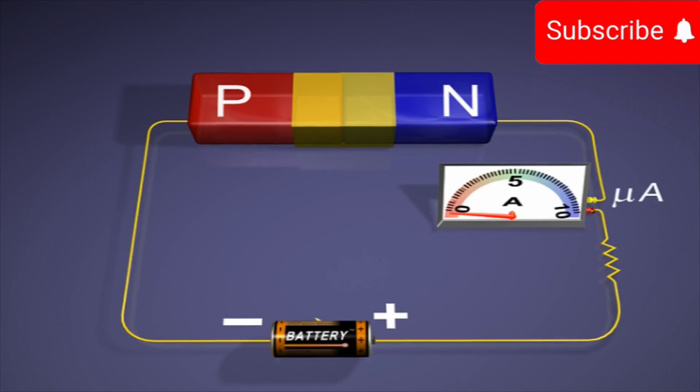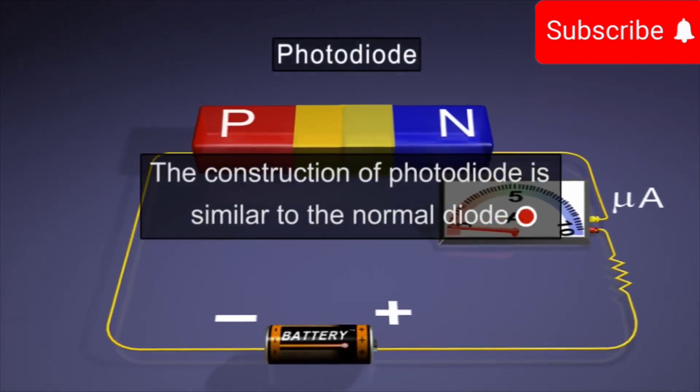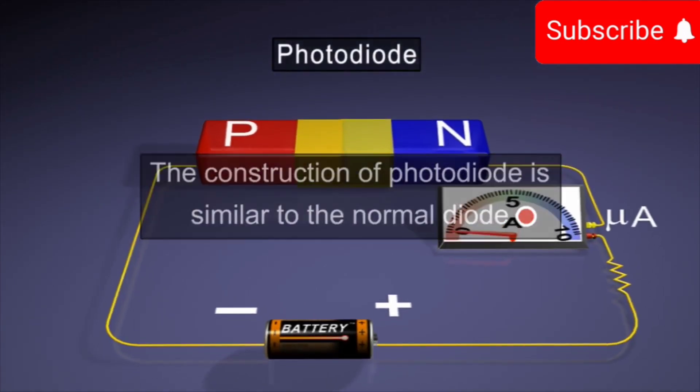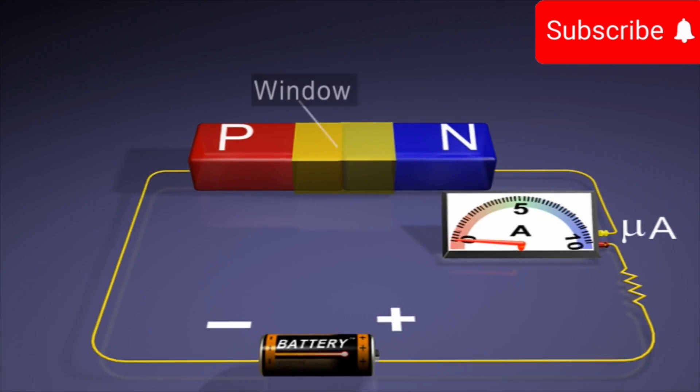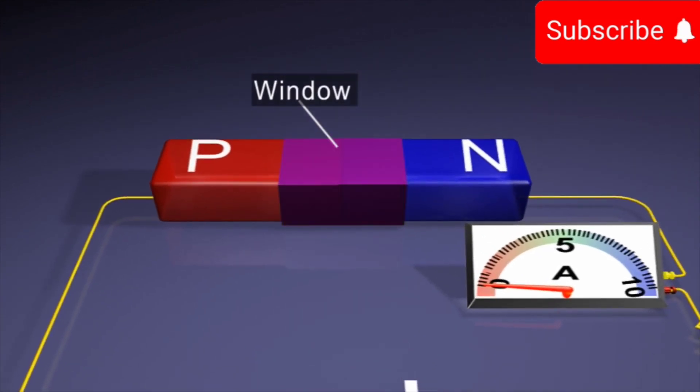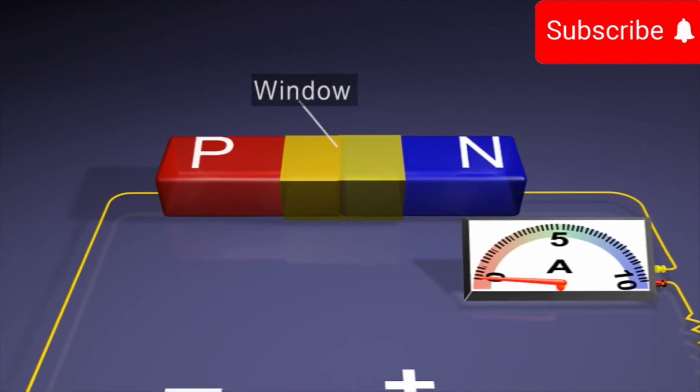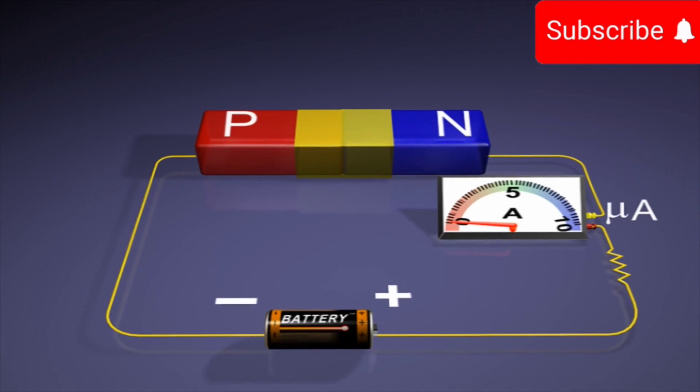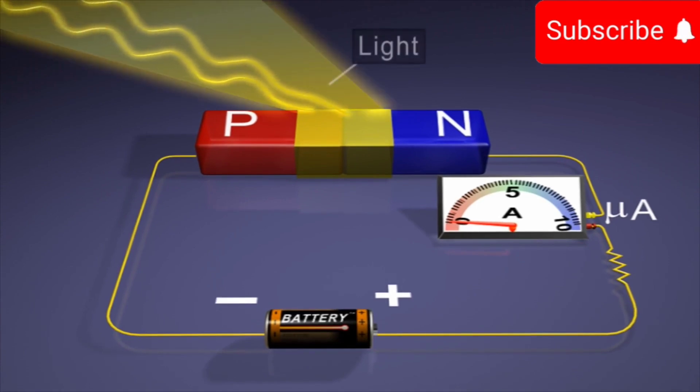Photodiode. The construction of photodiode is similar to the normal diode. The only difference between the two is that there is a window in a photodiode through which the light enters and is incident on the diode.